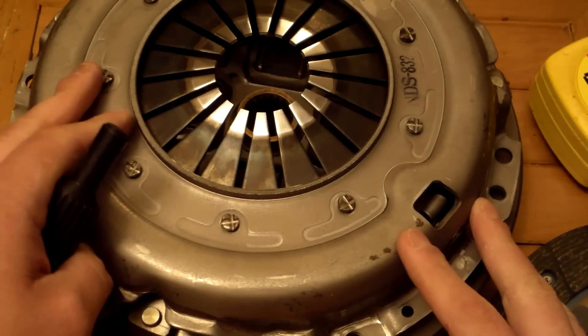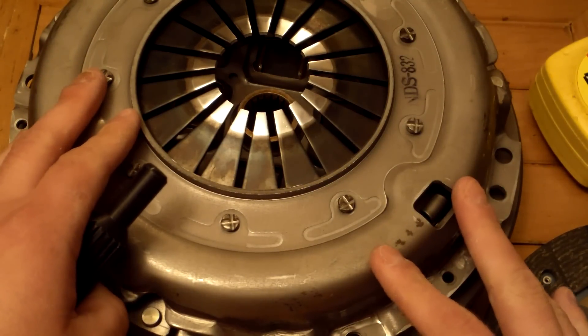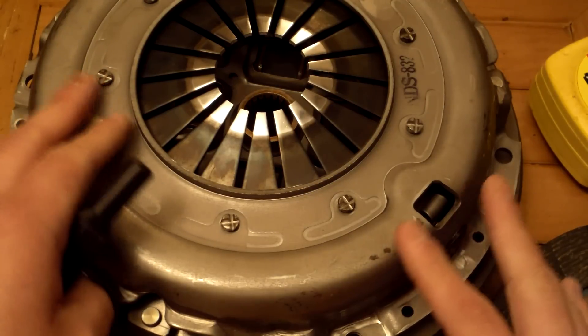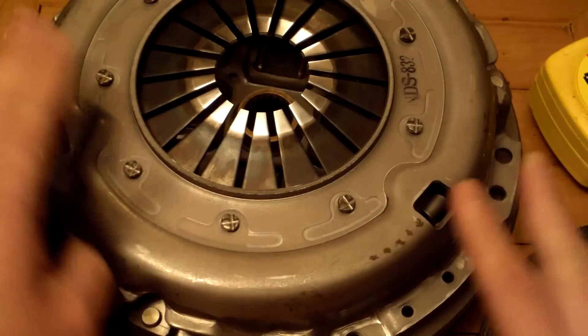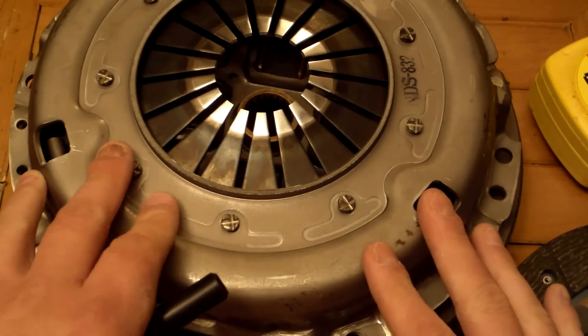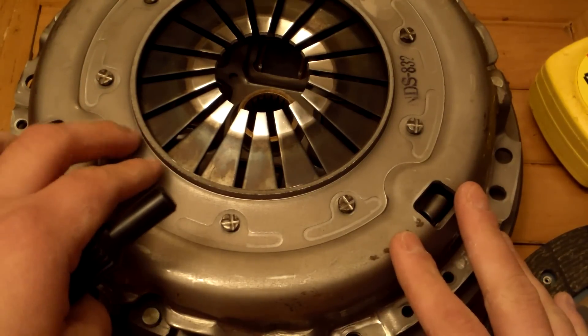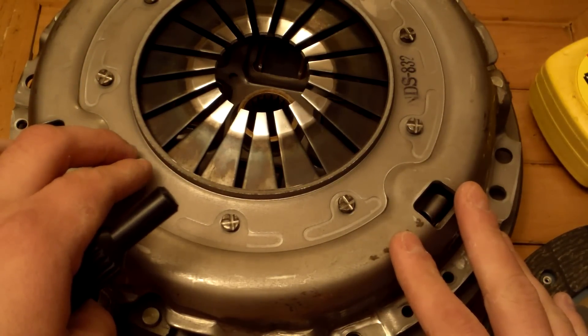This is the largest clutch that you can fit in a T50 transmission bell housing. This also sits a little higher, but we'll get into that a little bit later during the install.